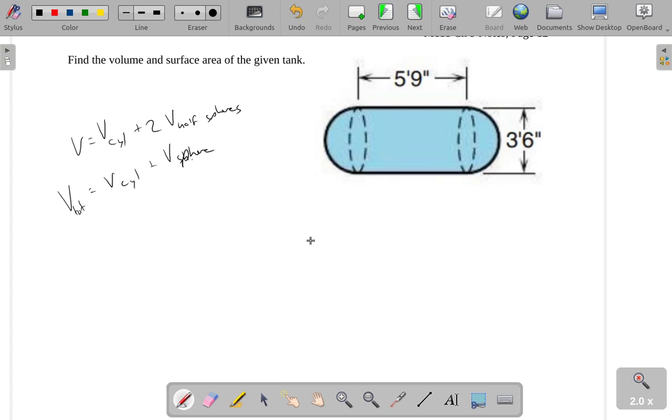So the volume total is going to be the volume of your cylinder, plus the volume of this sphere that's been cut in half, with half of it placed over here and the other half over here. All right, so that's kind of a plan. Now, looking at these measurements, 5'9 and 3'6, I don't like having mixed measurements like this. It's just kind of a pain in the butt. I'd rather convert these to either feet or inches.